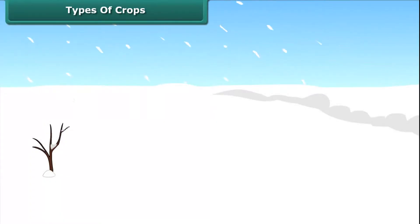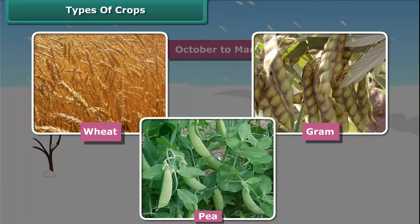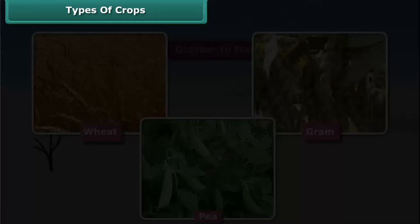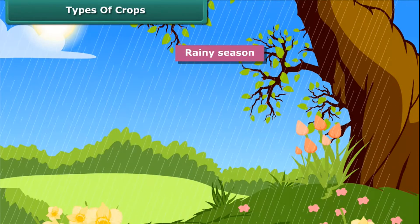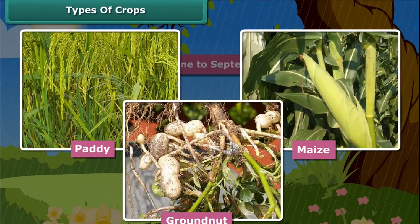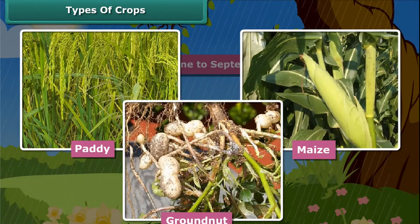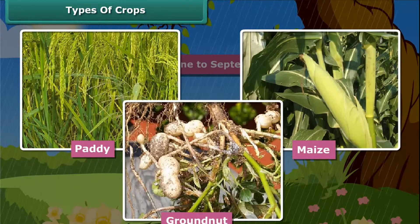Rabi crops are usually grown in the winter season from October to March. Wheat, gram, and peas are examples of Rabi crops. Kharif crops are usually sown in the rainy season, generally from June to September. Paddy, maize, groundnut, etc. are some common examples of Kharif crops. To grow crops, various activities are performed, which are known as agricultural practices.